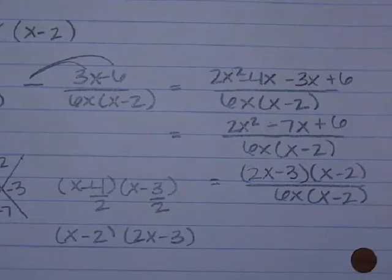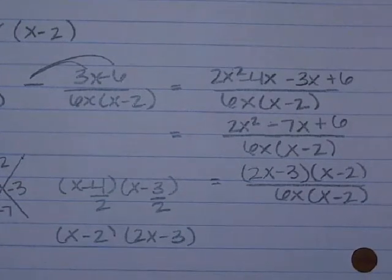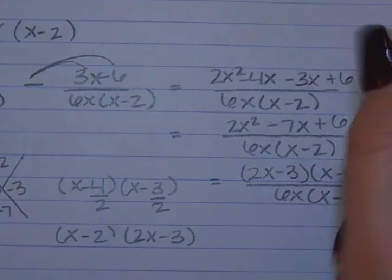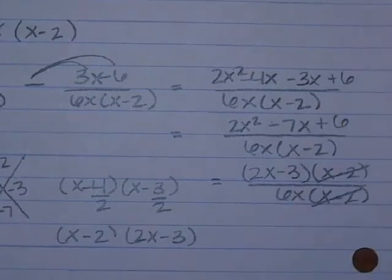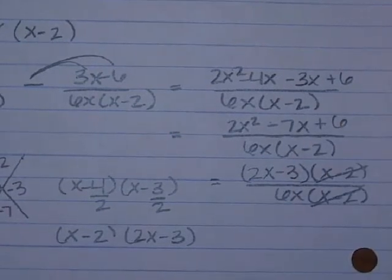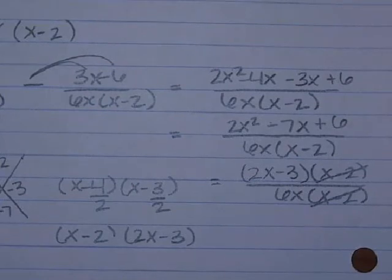The (x minus 2) factors cancel. What do we get after that? We need to check — can we reduce the 3 and the 6?